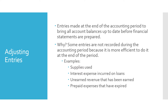Going back to the supplies example, it could be that every time we take some supplies out of the supplies closet we go make a journal entry to reflect that. But that's not a very efficient way to do things, and it really doesn't matter if the supplies account balance is adjusted until you put the financial statements together. At that point the supplies account balance needs to match up with the amount of supplies on hand. Some other examples are interest expense incurred on loans, unearned revenue that has been earned, and prepaid expenses that have expired.